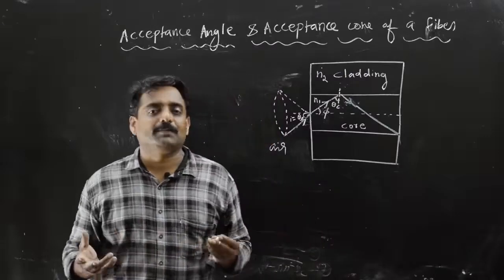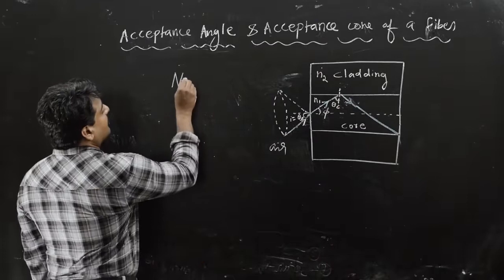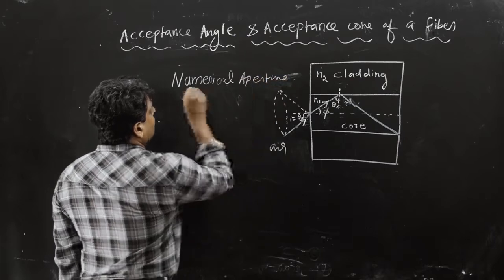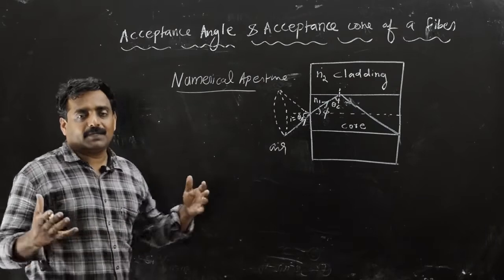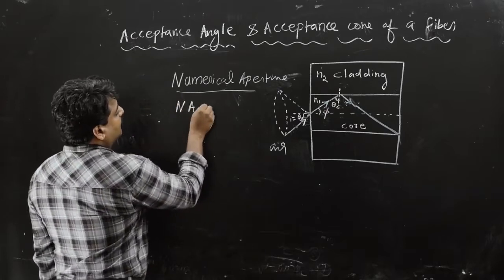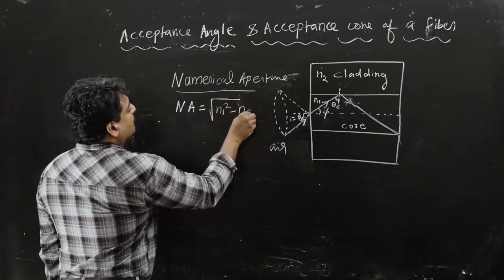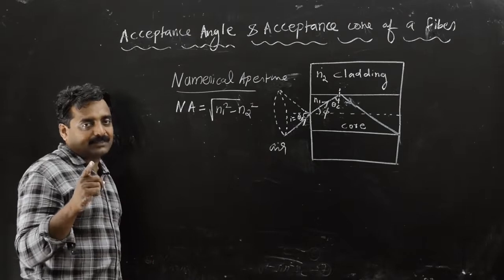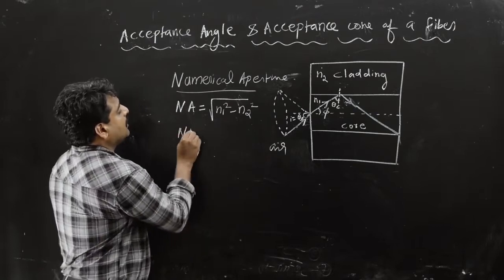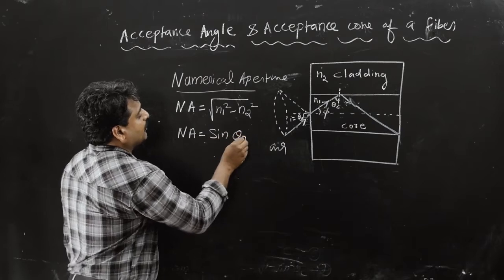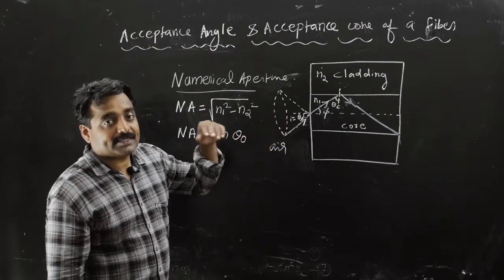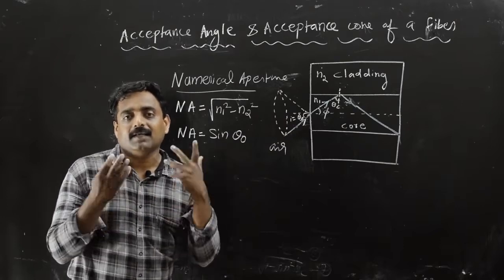The light-gathering power of an optical fiber is known as the numerical aperture. NA equals the square root of (n1 squared minus n2 squared), where n1 is the refractive index of the core and n2 is the refractive index of the cladding. Two-dimensional acceptance angle is known as acceptance cone.